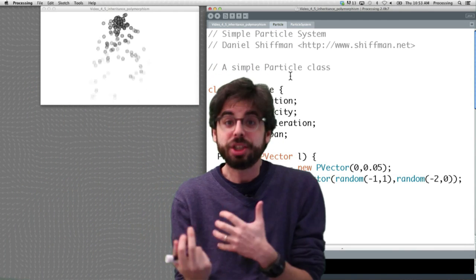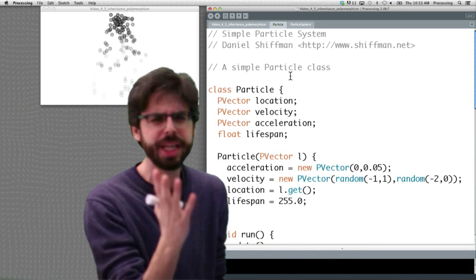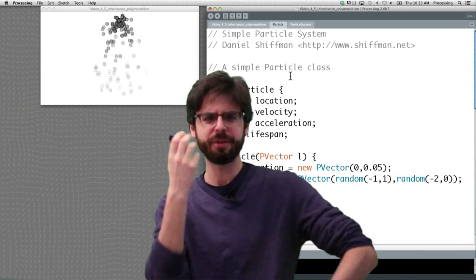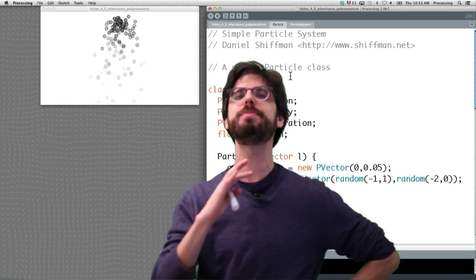Well, there's a bunch of different ways. On the one hand, we could just start adding lots more variables here and have booleans to keep track of which kind of particle should be drawn this way. On the other hand, we could say let's make some more classes.